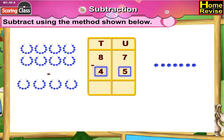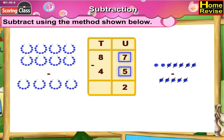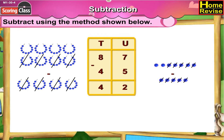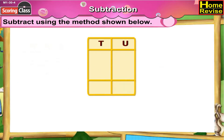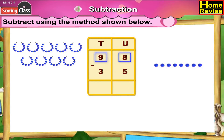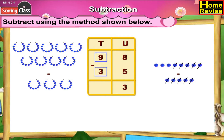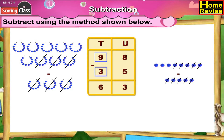87 minus 45. It is 8 tens 7 units minus 4 tens 5 units. 7 minus 5 is 2, 8 minus 4 is 4. So it is 4 tens 2 units. 87 minus 45 is 42. Next, 98 minus 35, which means it is 9 tens 8 units minus 3 tens 5 units. 8 minus 5 is 3, 9 minus 3 is 6. So it is 6 tens.